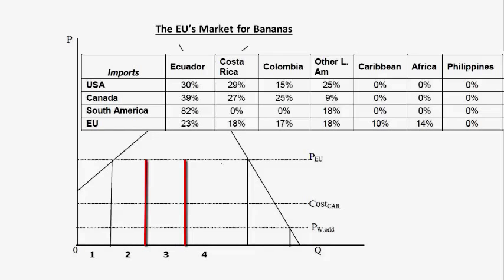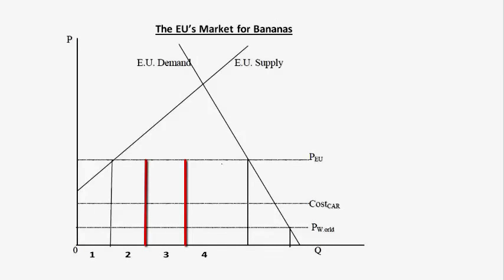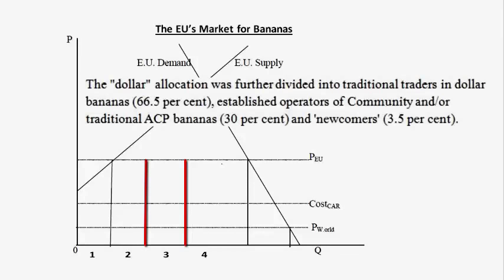For the 30% of imports supplied by traditional ACP countries, they would get to supply duty-free. The dollar allocation was going to be divided as follows: two-thirds to traditional traders from dollar countries, 30% to established operators of Europe or traditional ACP bananas, and newcomers could get 3.5% of that allocation.